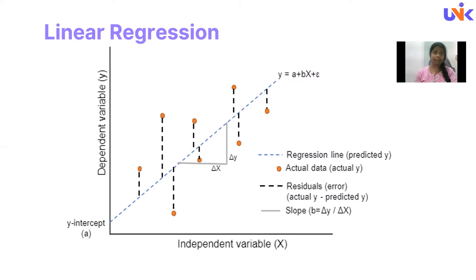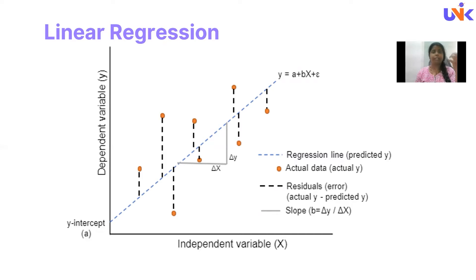Once you identify the relation between the variables, you can use this in order to predict what will happen in the future — what will be the price of a certain property, provided you with the value of square feet, the number of bedrooms, and so on.